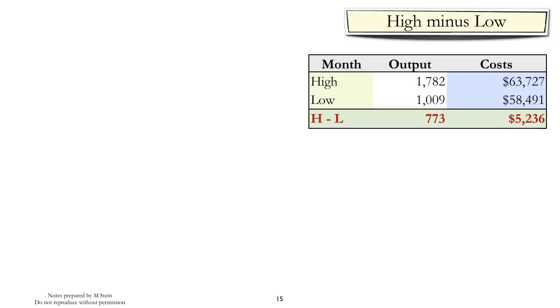The next step, once we've identified the high point and the low point, is to subtract the low from the high and calculate the differences. As you can see, we have the differences in costs and the differences in output.